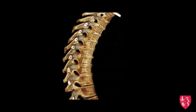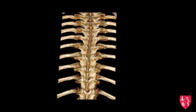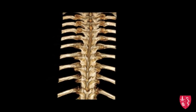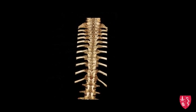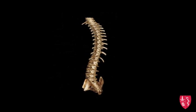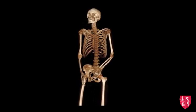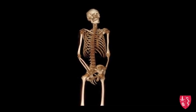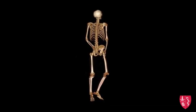Osteophytes, or bone spurs, form naturally on the spine as a person ages and are a sign of degeneration in the spine. Bone spurs on the spine can impinge on nerves that leave the spine for other parts of the body, which can cause pain in both upper and lower limbs, as well as a numbness or tingling sensation in the hands and feet.